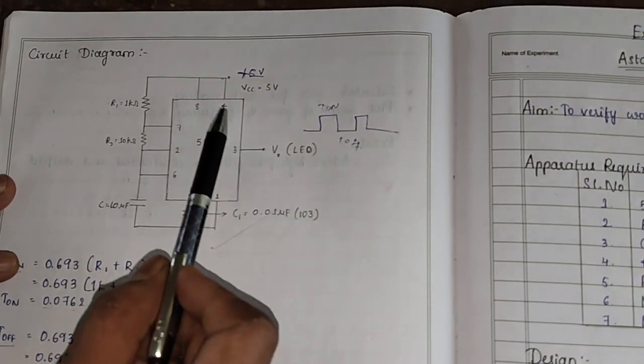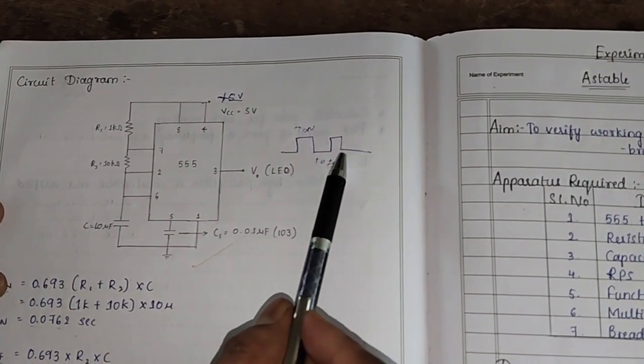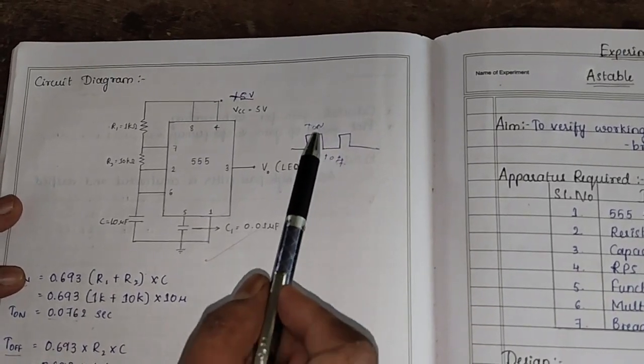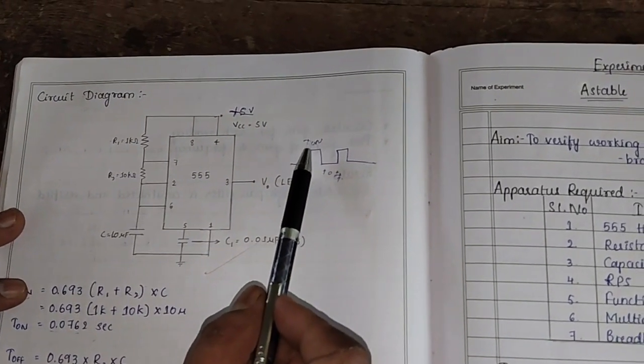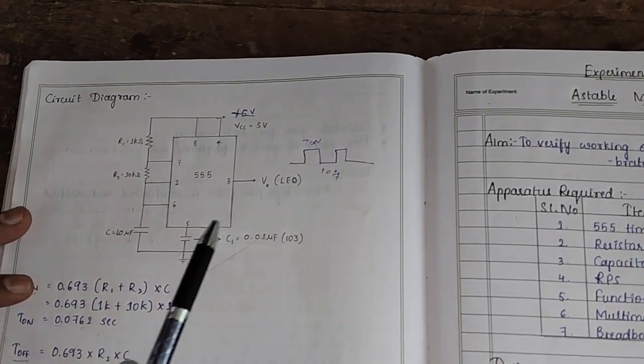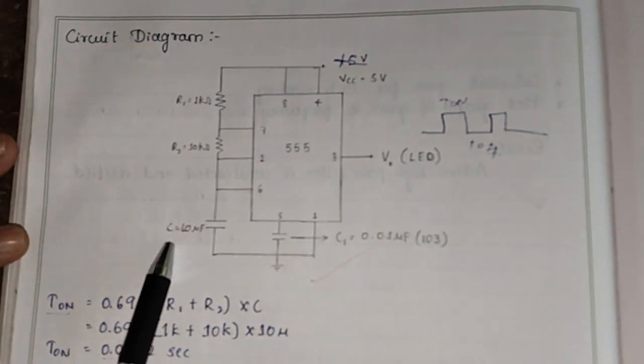This circuit, once we apply this DC voltage, continuously generates the square wave which is having T on and T off. We have to design the value of T on and T off, and the value of T on and T off depends on the value of R1, R2, and C.